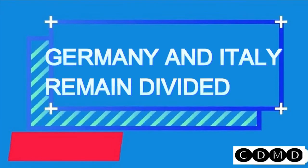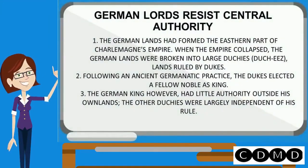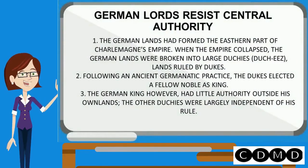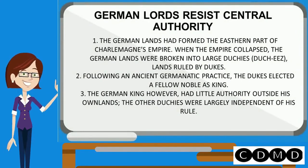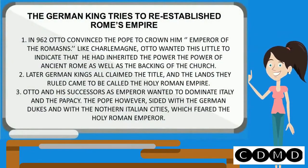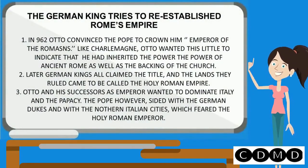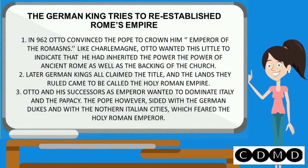Germany and Italy remained divided. The German lands had formed the eastern part of Charlemagne's empire. When the empire collapsed, the German lands were broken into large duchies ruled by dukes. Following an ancient Germanic practice, the dukes elected a fellow noble as king. German kings tried to re-establish Rome's empire. In 962, Otto convinced the pope to crown him emperor of the Romans. Like Charlemagne, Otto wanted this title to indicate that he had inherited the power of ancient Rome. Later, German kings all claimed this title, and the lands they ruled came to be called the Holy Roman Empire.